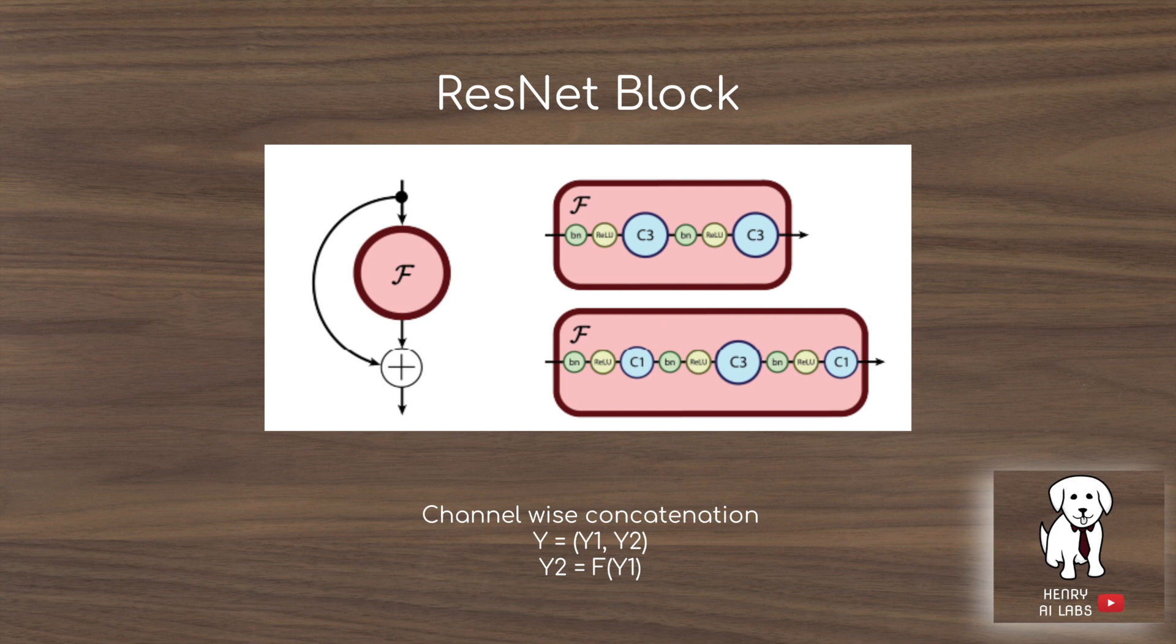You can also imagine if you have channel-wise concatenation, like in the ResNet blocks. Usually the next features are X plus F of X, so you're adding it at each location, adding the features. But you can also imagine concatenating and just stacking along the previous layer's features along the channel dimension.